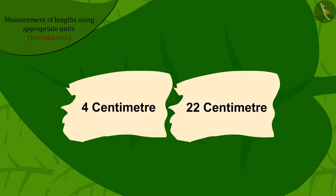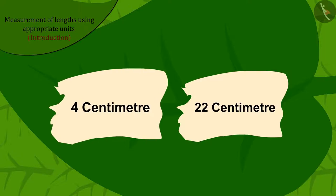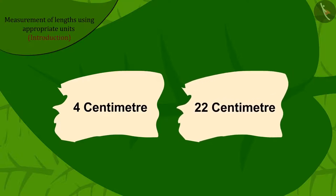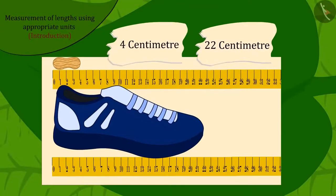Now, Chanda found these two pieces of paper on which 4 cm and 22 cm were written. Now, can you match the length of the remaining two objects with their correct lengths? You can find the answer by pausing the video. Well done, kids! You have found the answers to them.